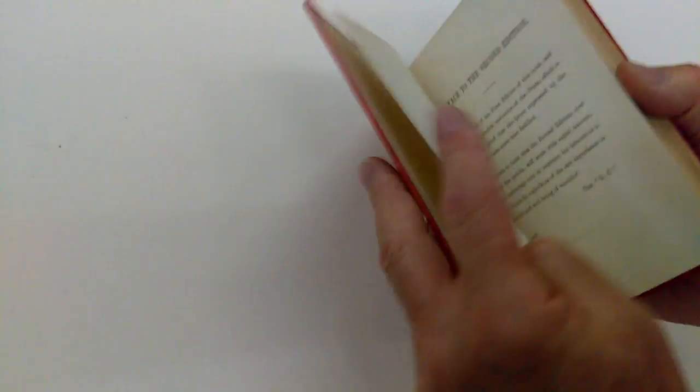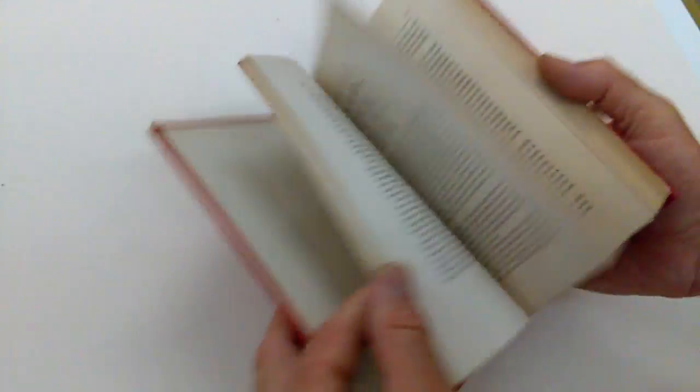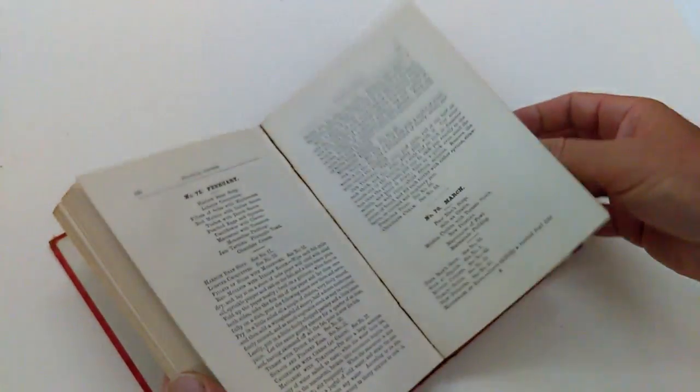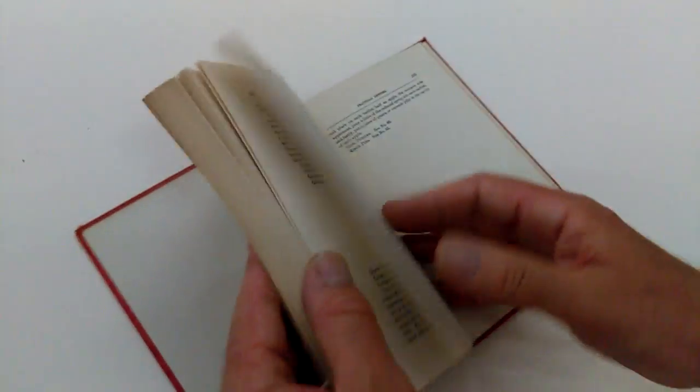The binding is a bit faded and knocked around. It's been used. It's a cookery book. It gets slightly loose in the binding, maybe a stain or two.